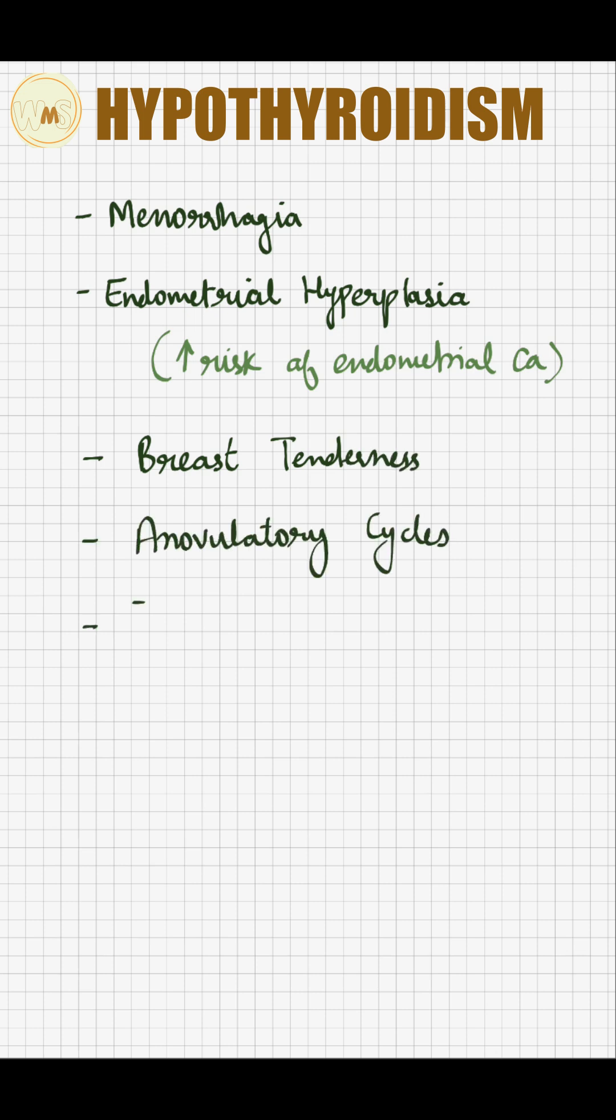There are anovulatory cycles and infertility because of decreased GnRH, LH, and FSH levels, and galactorrhea because of hyperprolactinemia.